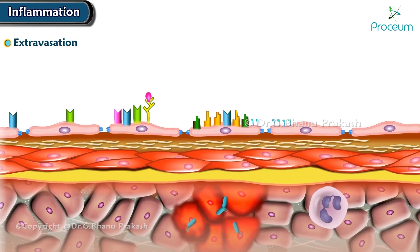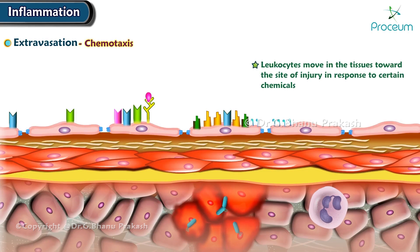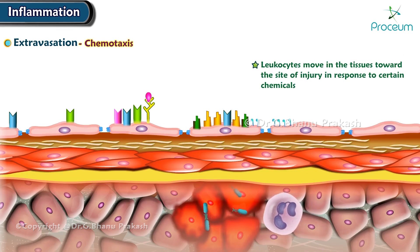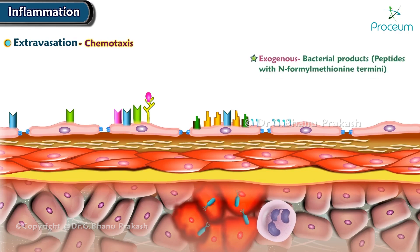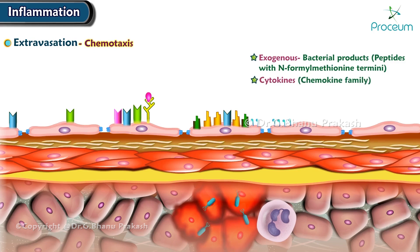The last cellular change is chemotaxis. After exiting circulation, leukocytes move in the tissues toward the site of injury in response to certain chemicals by a process called chemotaxis. This process involves exogenous bacterial products, particularly peptides with N-formylmethionine termini, cytokines especially of the chemokine family, and endogenous products such as C5a and arachidonic acid metabolites, including LTB4, IL-1, TNF, and IL-8.